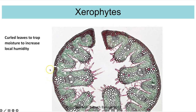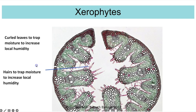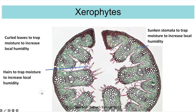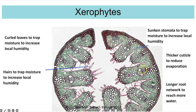The leaf is curled up, trapping evaporated water and increasing local humidity, which reduces the water potential gradient from inside the cells to outside, reducing transpiration. Hairs on the leaf surface also trap moisture, increasing local humidity and decreasing the water potential gradient. Sunken stomata create increased local humidity by trapping humid air lower in the cell. A thicker cuticle on the outside reduces water loss by evaporation from the surface. Additionally, longer root networks allow more water to be absorbed by the plant.